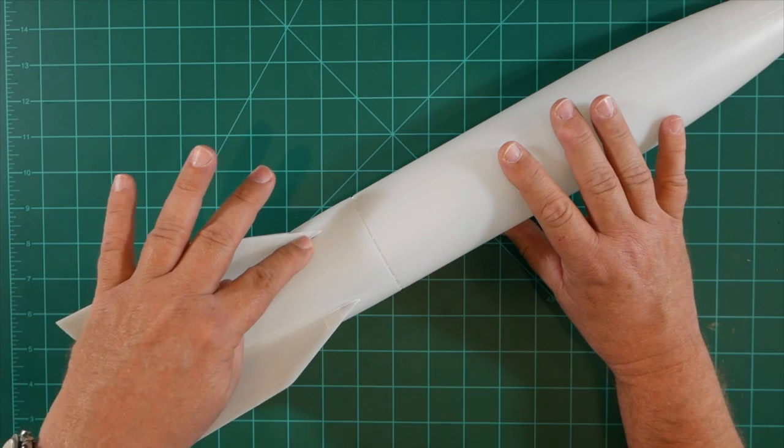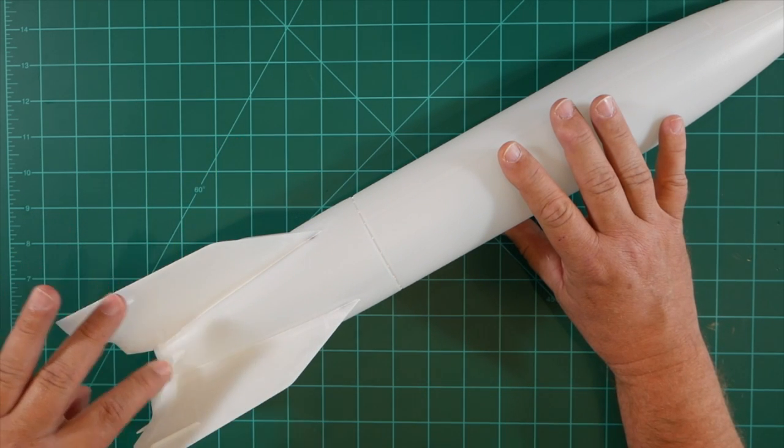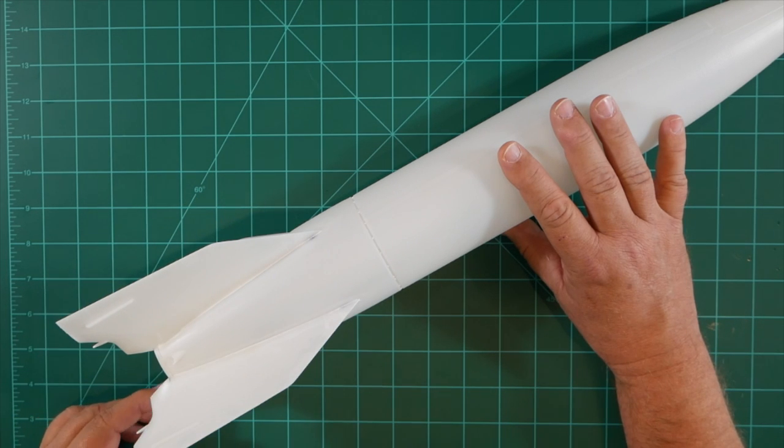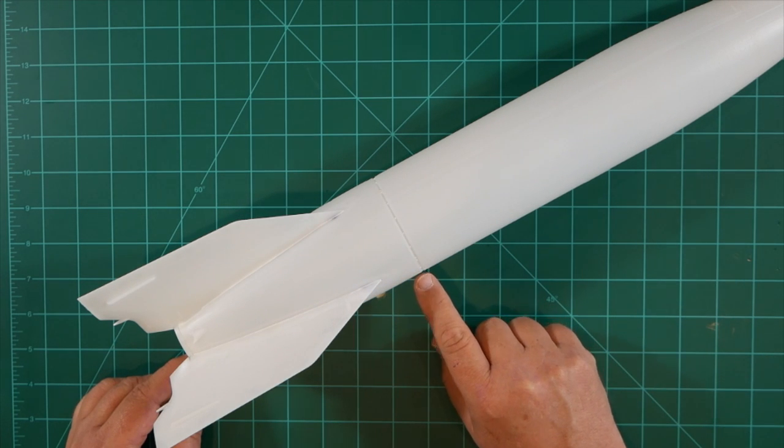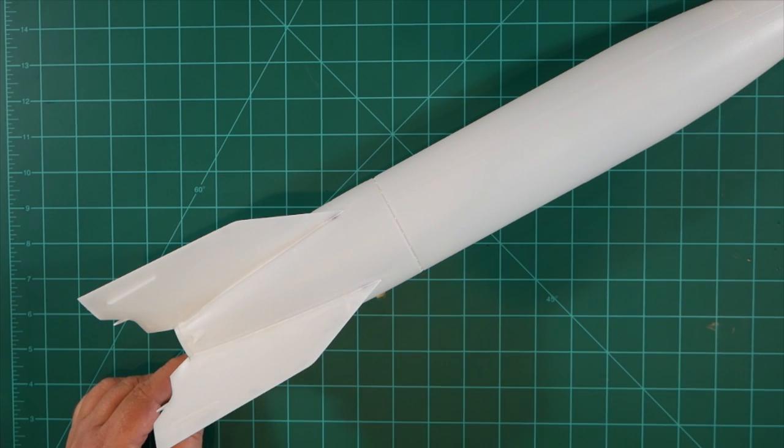We've also refined the fin airframe joints with filler putty during an optional step. We've installed the simulated fasteners to the joint between the aft and mid airframe sections.